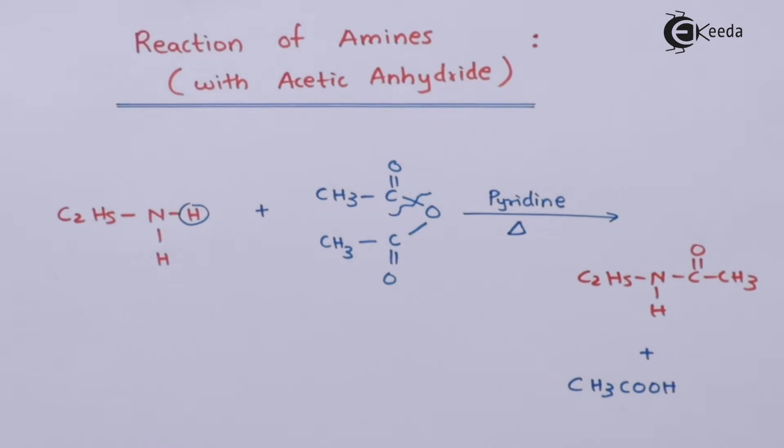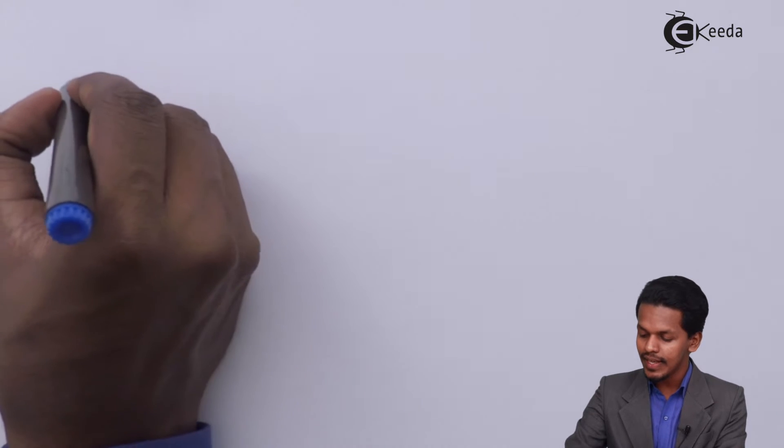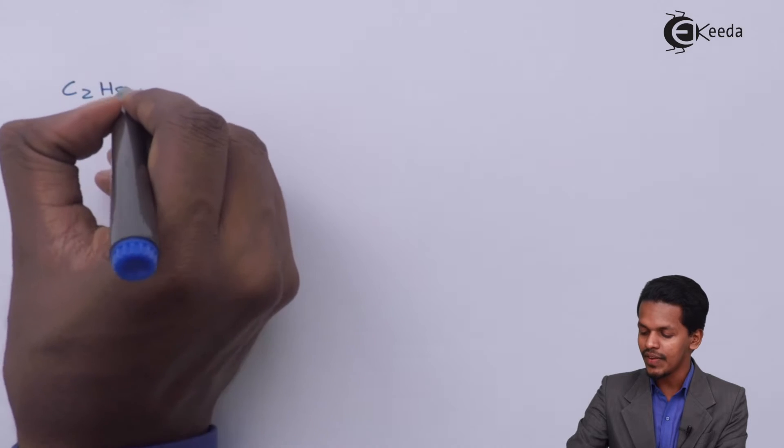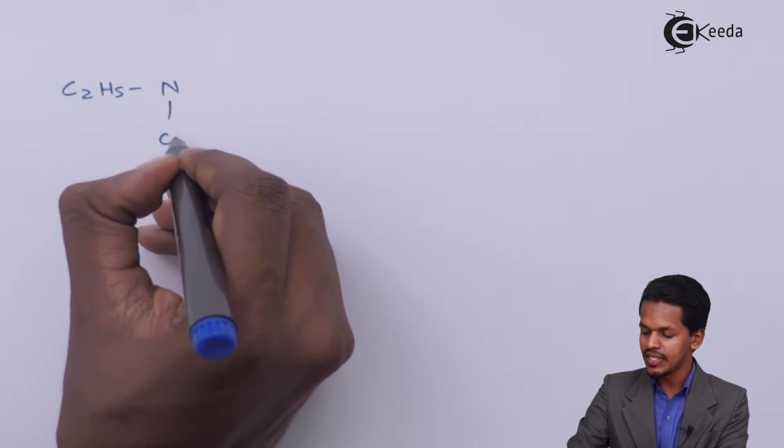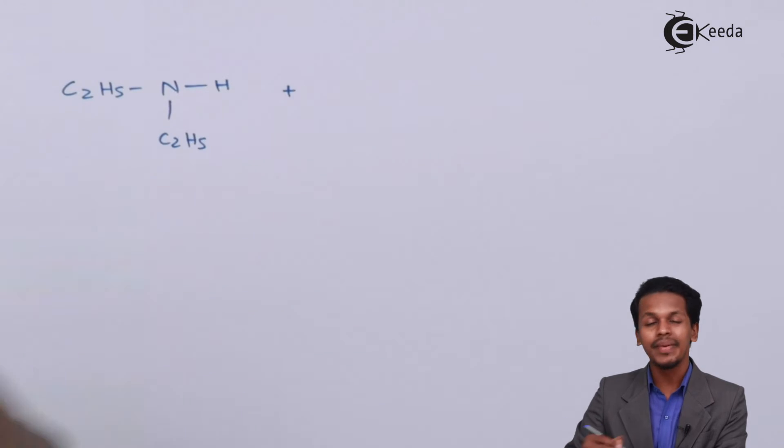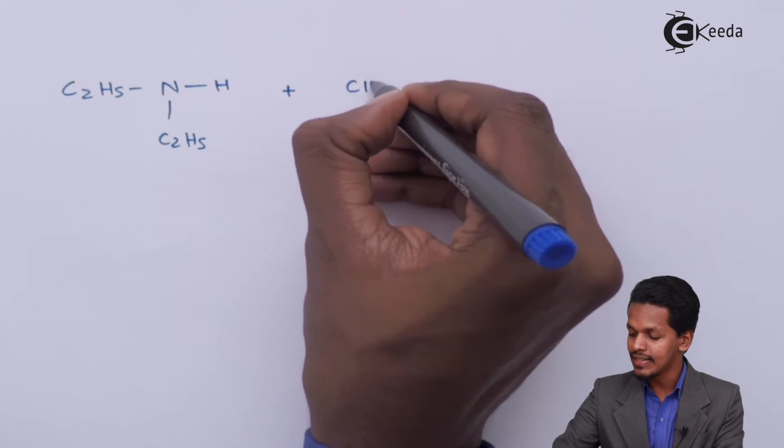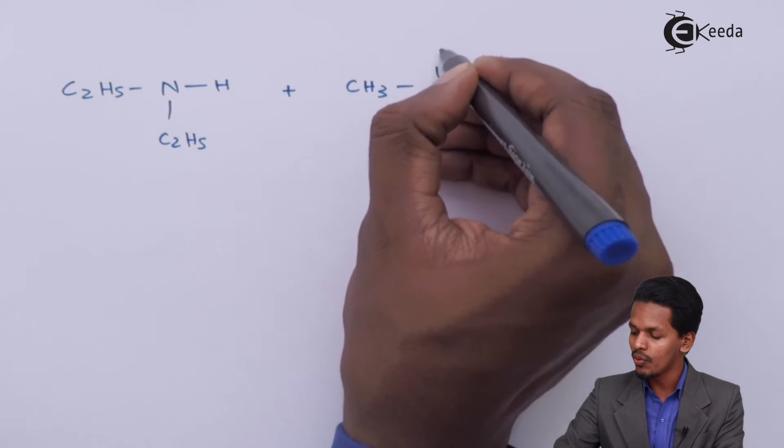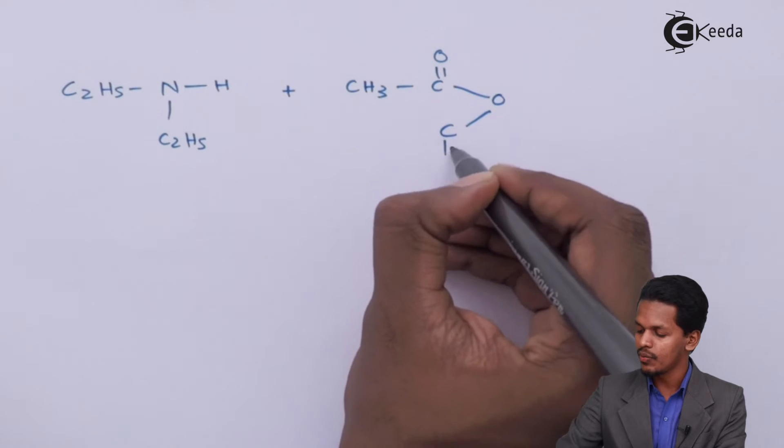So now let me discuss the reaction of secondary amine with acetic anhydride. Suppose if I am considering an example of a secondary amine, C2H5N, C2H5. And suppose I am reacting it with acetic anhydride, CH3COO, this is the structure.